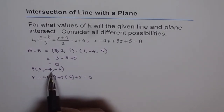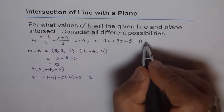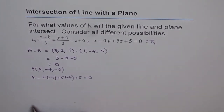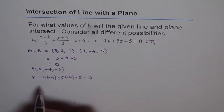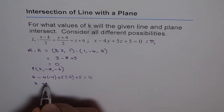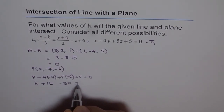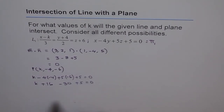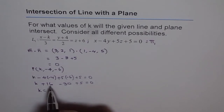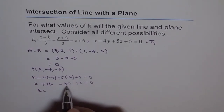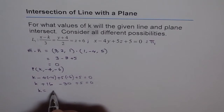We substituted the point on the line into the plane equation. So we have: k − 4 + 16 − 30 + 5 = 0. Solving: k = 30 − 16 − 5 = 9. Wait, let me recalculate: k + 16 − 30 + 5 = 0, so k = 30 − 16 − 5 = 9. So k = 9.